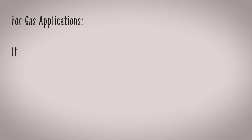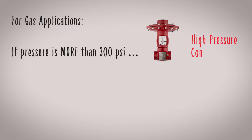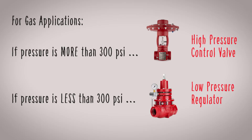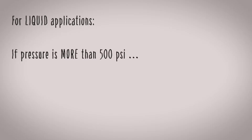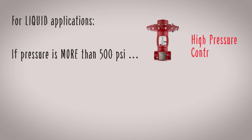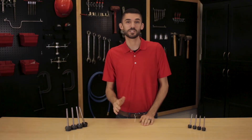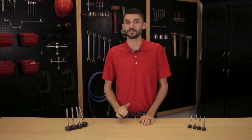For gas applications, if your pressure is more than 300 psi, you need a high pressure control valve. If it's less than 300 psi, you can likely use a low pressure regulator. For liquid applications, if your pressure is more than 500 psi, you need a high pressure control valve. If it's less than 500 psi, you can use a mechanical or pneumatic dump valve.